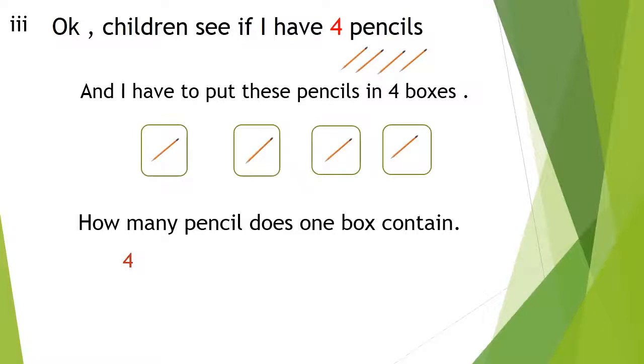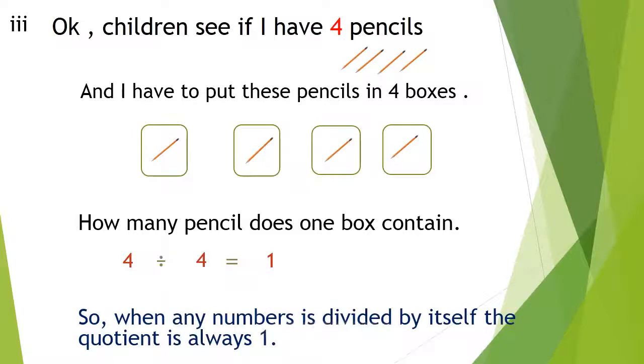How many pencils does one box contain? As you know, we have to divide: 4 divided by 4 equals 1. So when any number is divided by itself, the quotient is always one. Goodbye children.